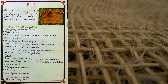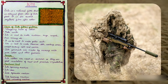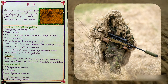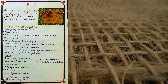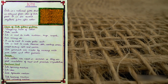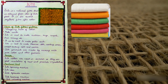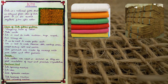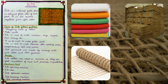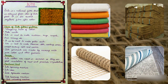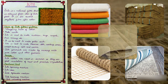It can be used to make ghillie suits. Jute is also used to make hessian cloth, sacking, scrim, carpet backing cloth and canvas.